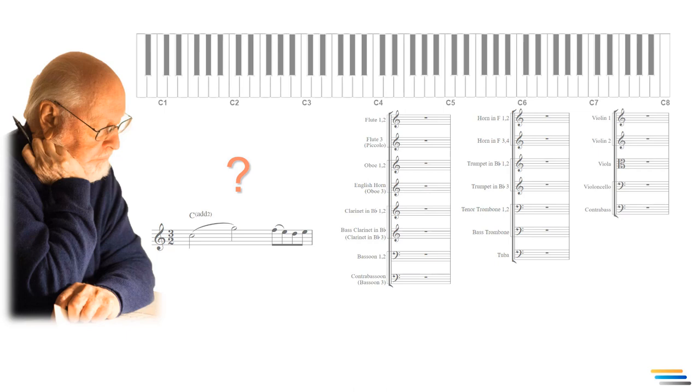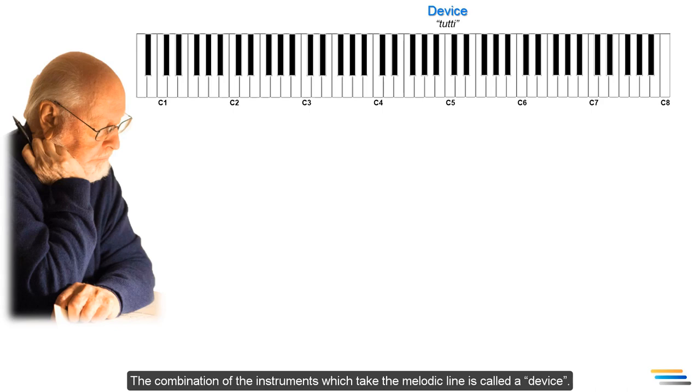The first step is to choose the instruments that play the melody. The combination of the instruments which take the melodic line is called a device. Let's choose a three-part device for this texture. This means that the melody will be in three different registers.